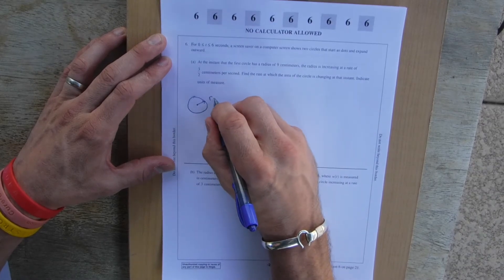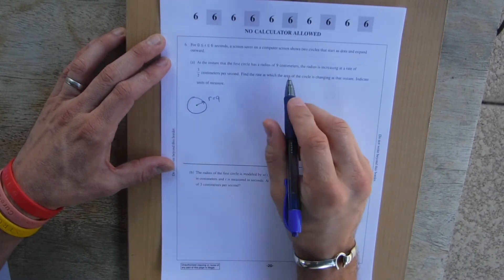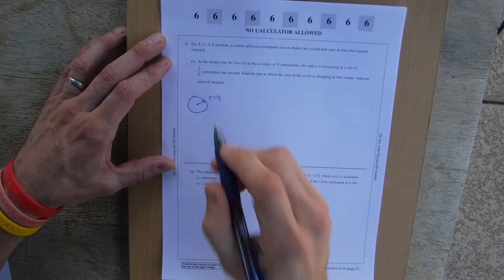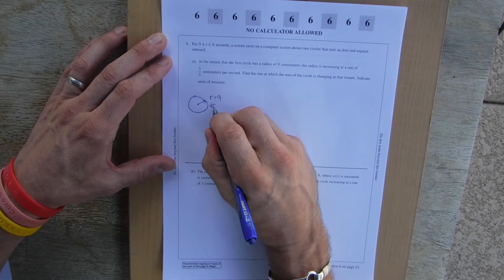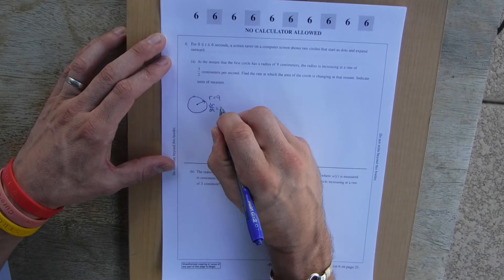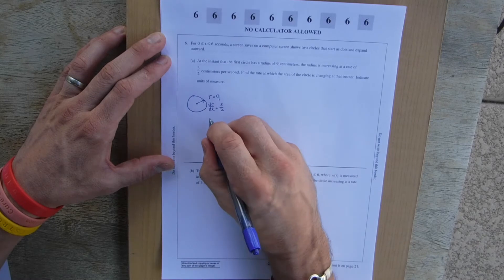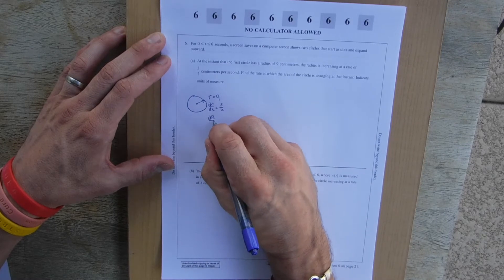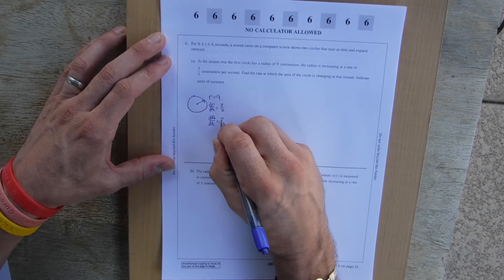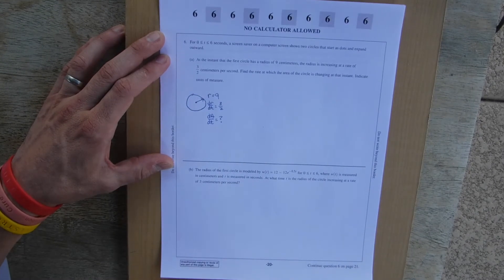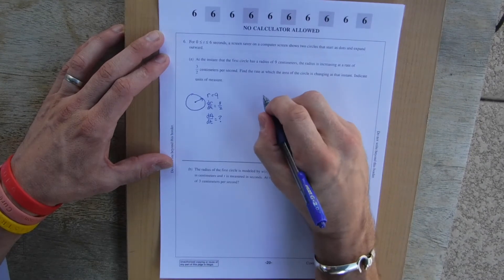At the instant that the first circle has a radius of 9 centimeters, the radius is increasing at a rate of 3/2 centimeters per second. Find the rate at which the area of the circle is changing at the instant. So we know that when the radius is 9, the radius is increasing. So dr/dt, radius with time, is 3/2.